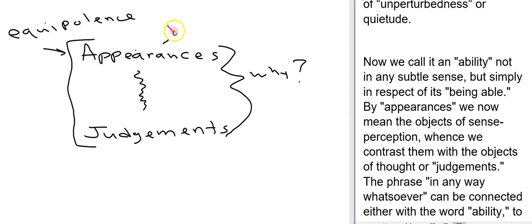Appearances are how things seem especially as seen through the senses and then he tells us we contrast that with objects of thought or judgments. So judgments is just sort of how we think about things or how we judge the world to be.